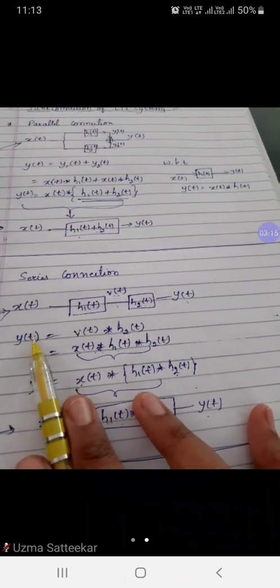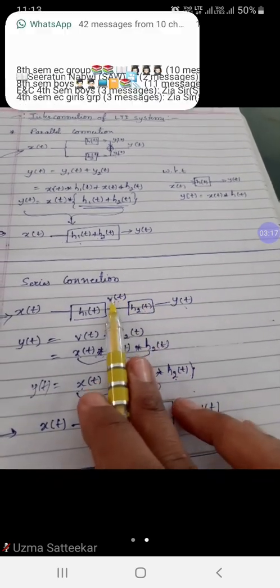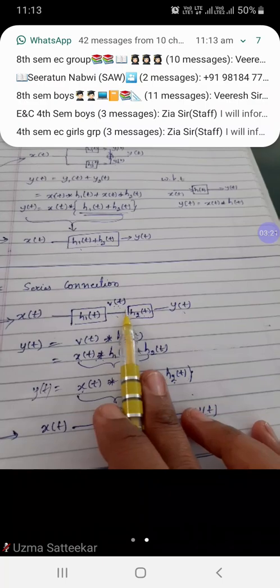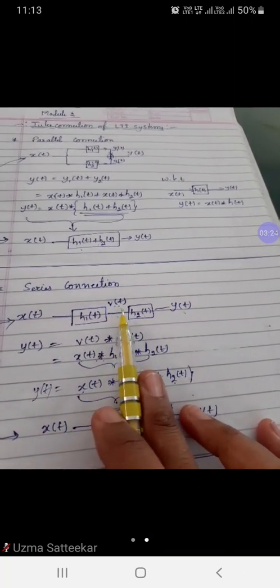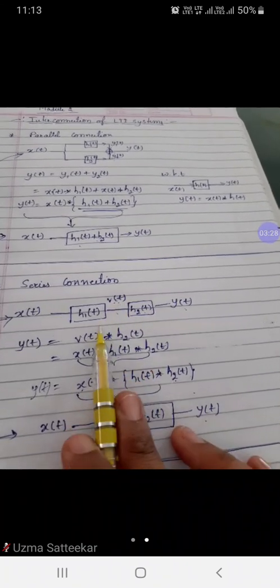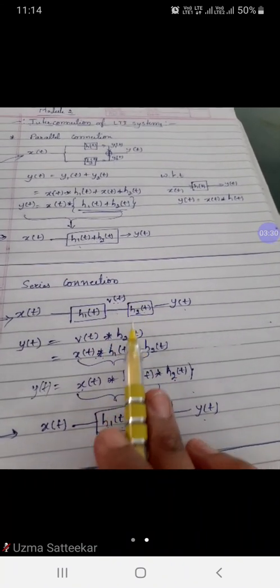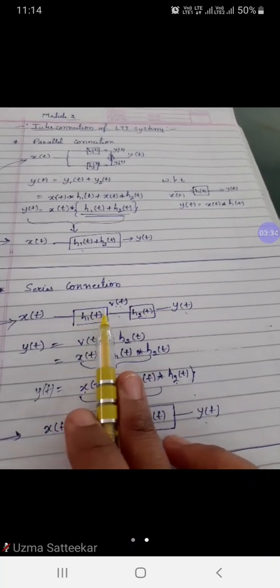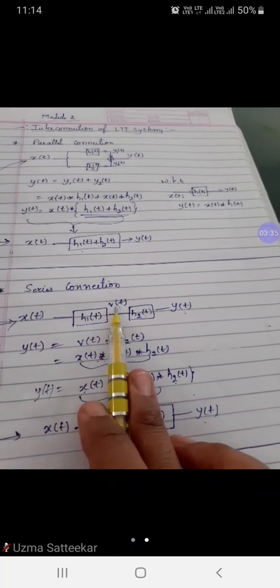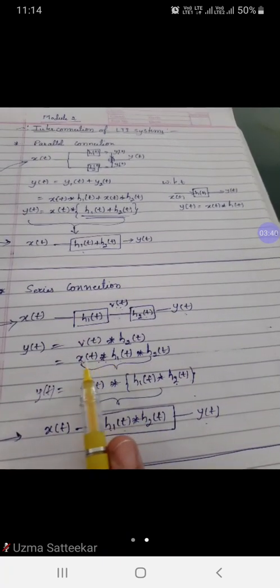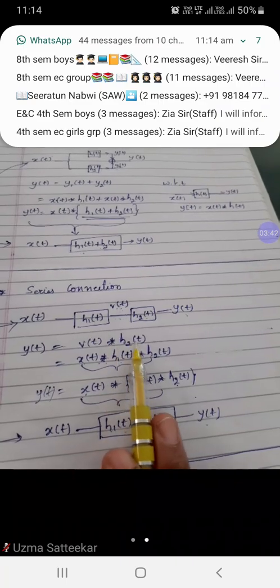y(t) is given by—the output is the input coming from this side convolved with h2. So I have taken this as v(t) convolved with h2. But what is v(t)? v(t) is coming from these two, so v(t) is the convolution of x and h1. That's what is substituted here: x and h1, and h2 as it is.